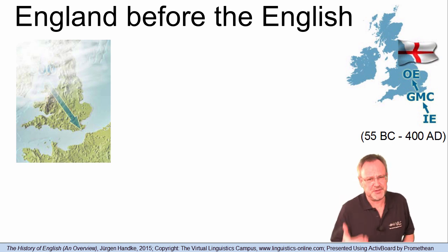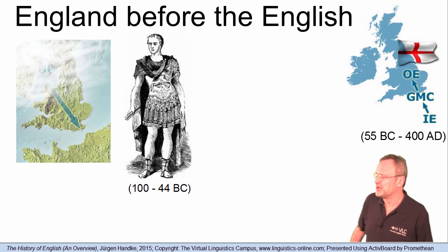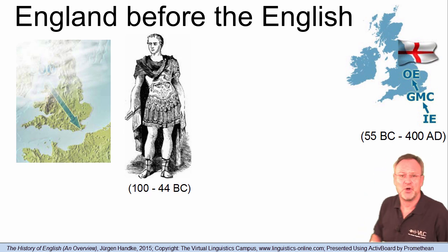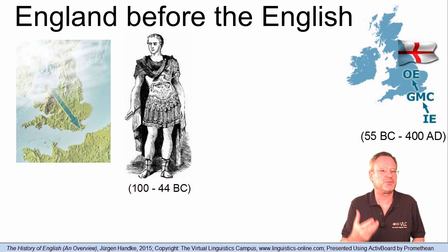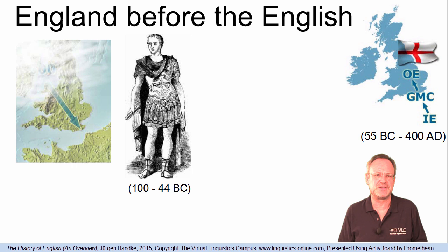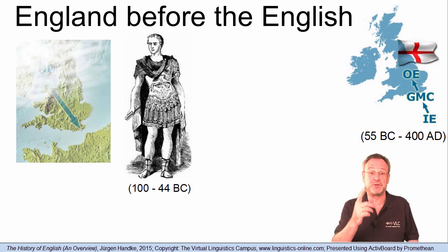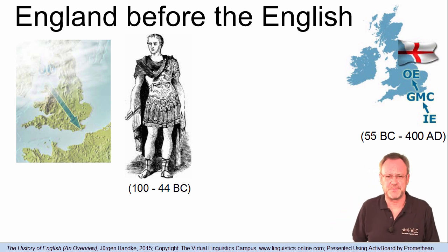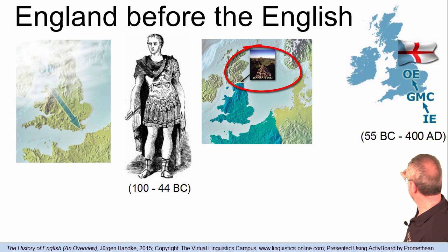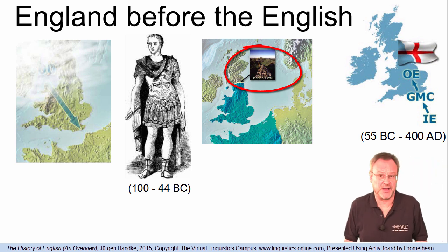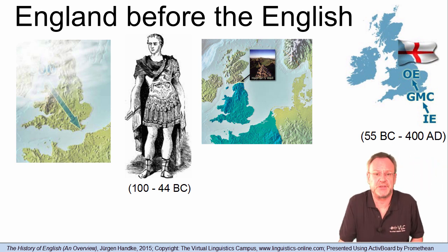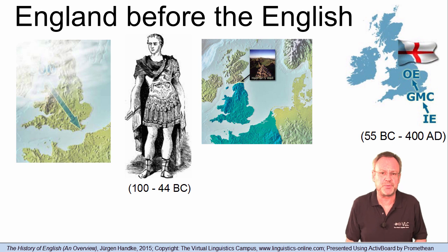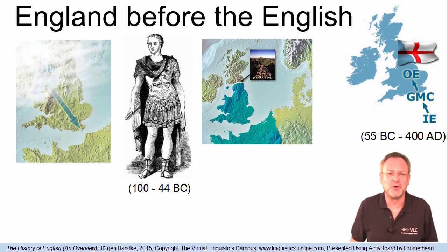Beginning in 55 before Christ, Julius Caesar, the Roman Emperor, made several attempts to invade Britain. But it was not before 50 after Christ that most of the land was under Roman domination, except for the northern part, which remained unconquered. Hadrian's Wall represents the borderline. England became Rome's westernmost outpost and was gradually Romanized.